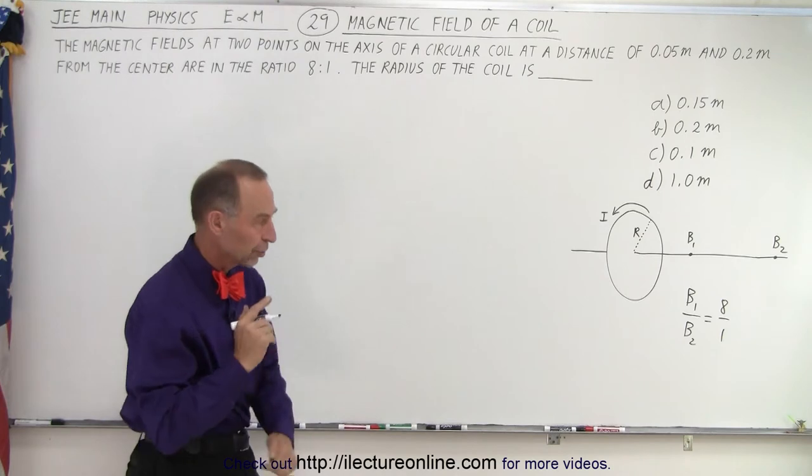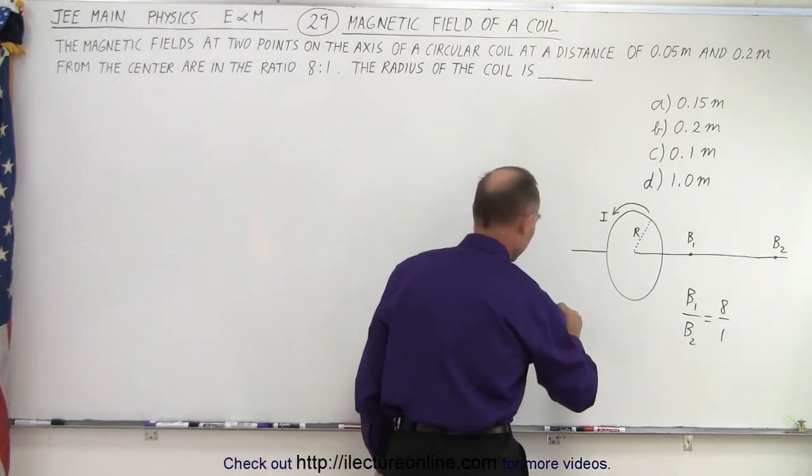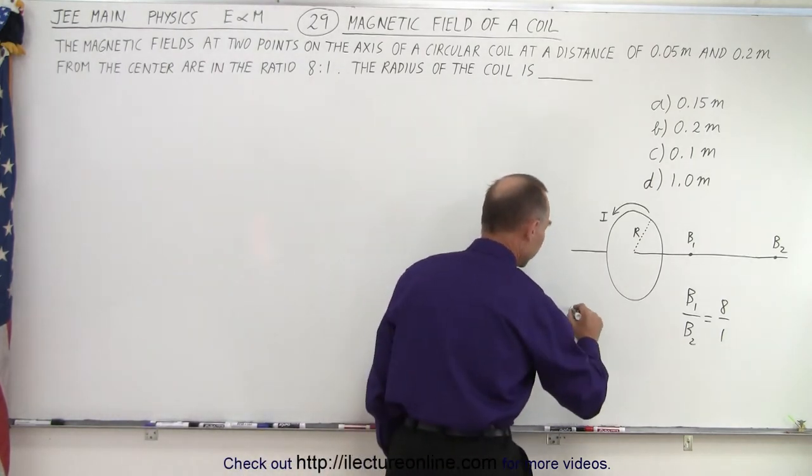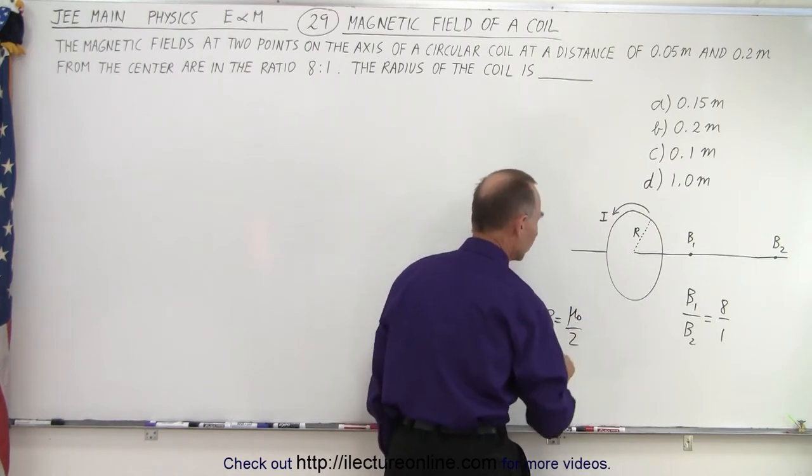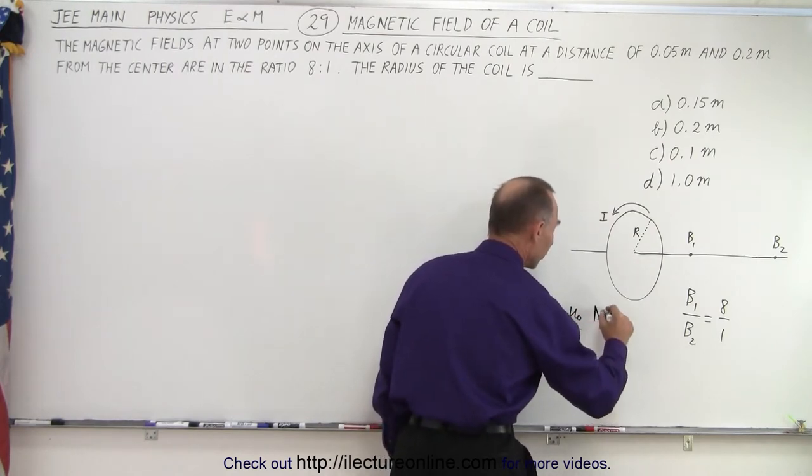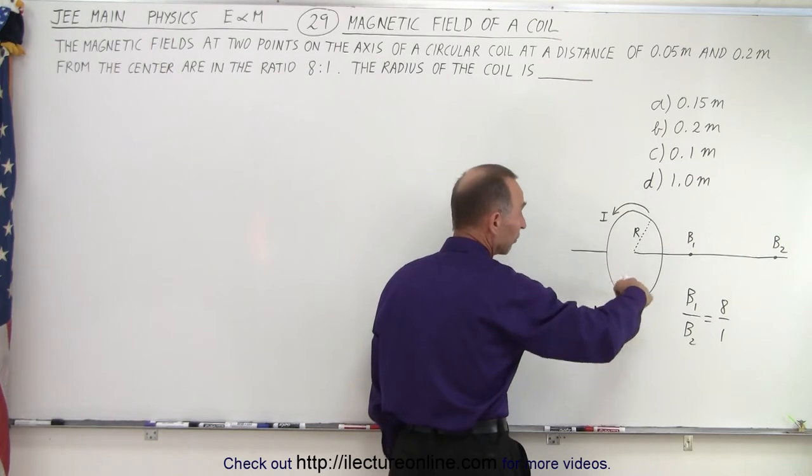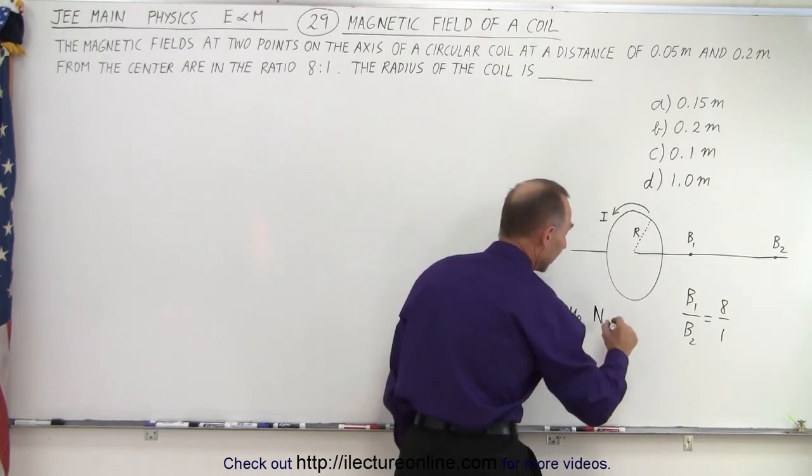Now you need the equation. The equation is as follows. The magnetic field on the axis of a coil is equal to mu sub naught divided by two times the number of loops in the coil. Of course if there's only one loop that becomes one times the current times the radius squared divided by the quantity let's call it x squared.